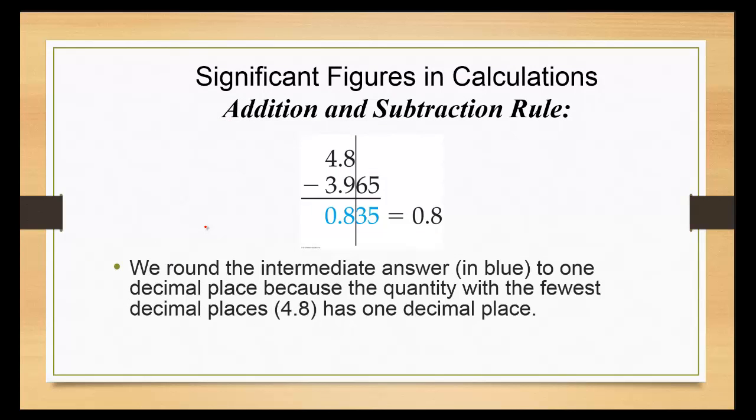For here, 4.8, eight is the last significant figure. 3.965, five is the last significant figure. The eight ended first. So that means I'm going to round it out to the point eight. I only have one significant figure in my final answer, but that's okay because I'm looking at the place value, not the quantity.